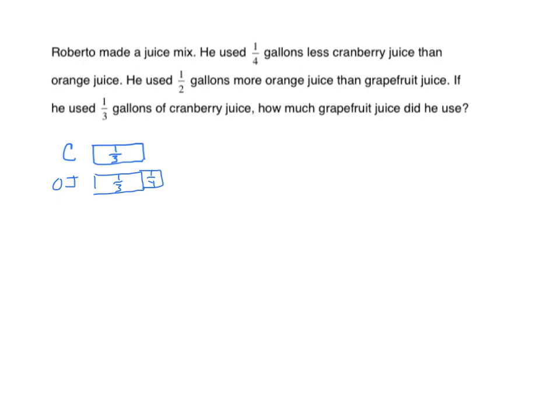Looking at the next sentence: he used one-half gallon more orange juice than grapefruit juice — so we have more orange juice. We now add our grapefruit juice, represented with a G. Whatever the orange juice amount is, we had one-half gallon more of it than grapefruit. The question mark represents how much the grapefruit juice was. We need to find orange juice first, then subtract one-half from that amount to get grapefruit juice.